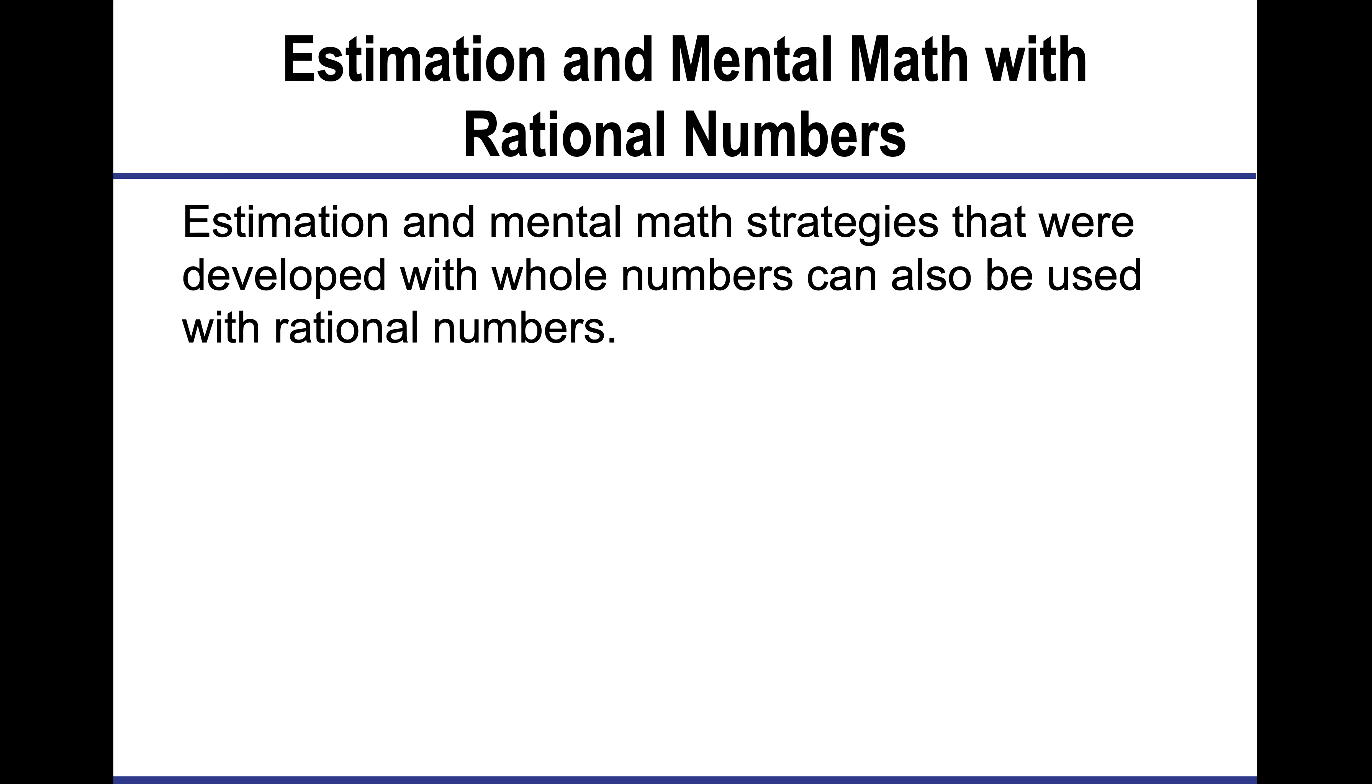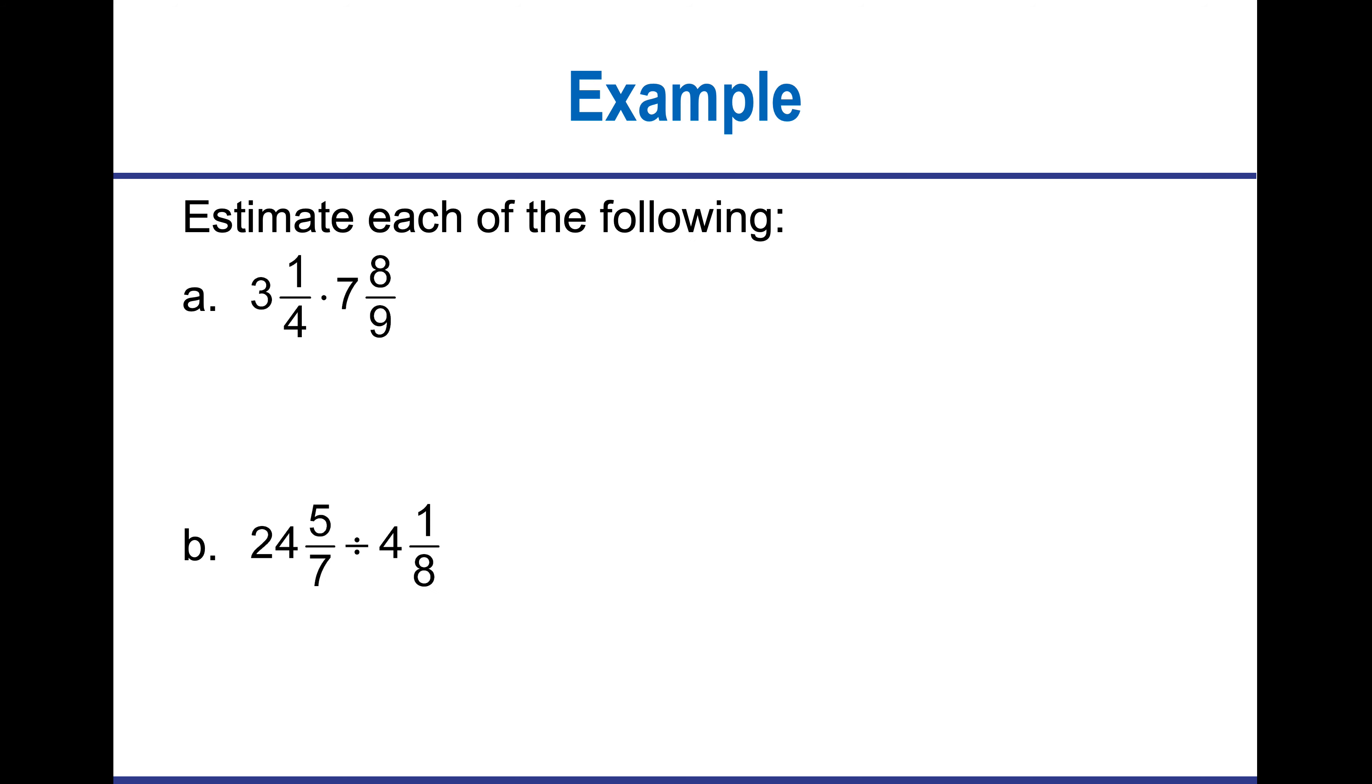Now, estimation in middle math comes into play here, because we can round to the nearest whole number like we did before. If I look at 3 and 1 fourth and 7 and 8 ninths, I could estimate that as 3 and 8. If I look at 3 and 8, that's 24. And if I try to figure out what it would be between, I know that it would be somewhere between 3 and the first number and 7, which would be 21, or 4 and 8, which would be 32. So I know it's between those two numbers, the best estimate probably being 3 times 8, which is 24.